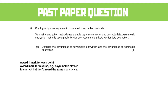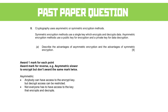Starting with asymmetric: anyone can have access to the encryption key — it's a public key. The decryption key is the only thing that has to be kept safe, which is a massive advantage. Not everyone has to have access to the key that encrypts and decrypts. The encryption key can be given out freely, and it's more secure than symmetric because we aren't able to go backwards from the encryption key to decrypt.